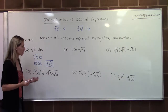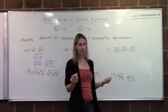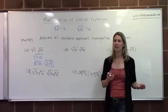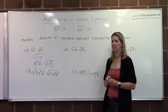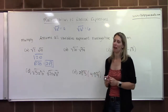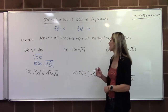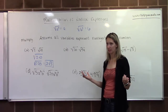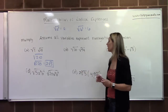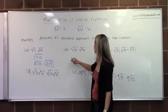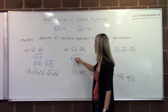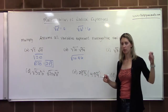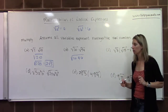Letter B: we have the square root of 20 times the square root of 54. Again, I don't want to multiply these numbers — I'd end up with something like 1,080, and I don't know the perfect square factors of that. So instead, I notice that 54 has a perfect square factor: 9 goes into it. When I rewrite this, I'll write 54 as 9 times 6. That way I have the perfect square of 9, whose root is 3.